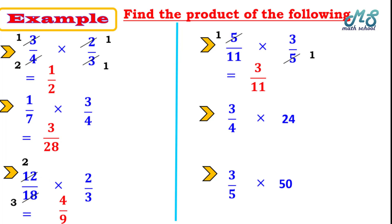Next: 3 over 4 times 24, which is a fraction times a whole number. 24 is divisible by 4, giving 6. So it simplifies to 3 times 6 equals 18. Similarly, 3 over 5 times 50 — 50 is divisible by 5, giving 10. So 3 times 10 equals 30.